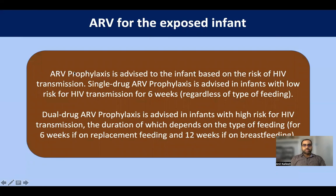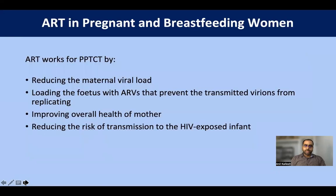ARV prophylaxis for infants exposed to an HIV-positive mother consists of single-drug prophylaxis for low-risk infants for six weeks, and dual-drug prophylaxis for high-risk infants. Duration differs by feeding type: in low-risk infants it is six weeks regardless of feeding type. In high-risk infants, duration is six weeks for exclusive replacement feeding and 12 weeks for breastfeeding.